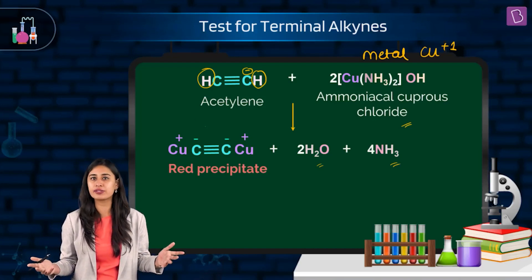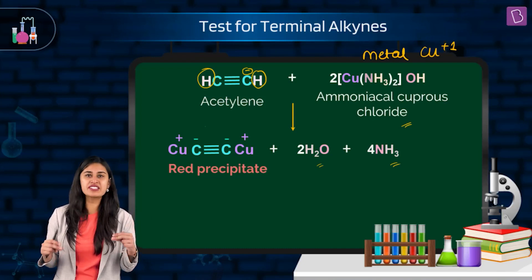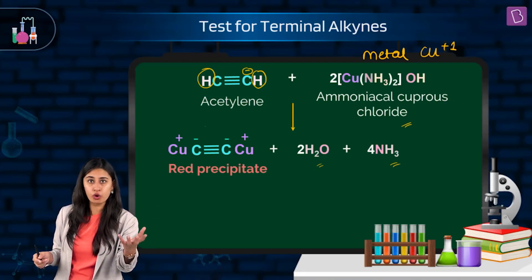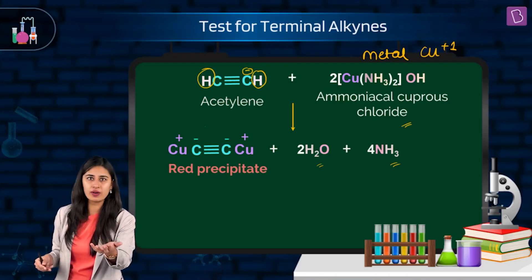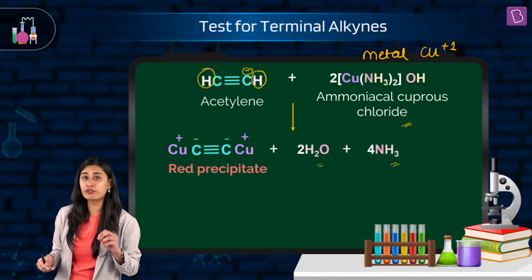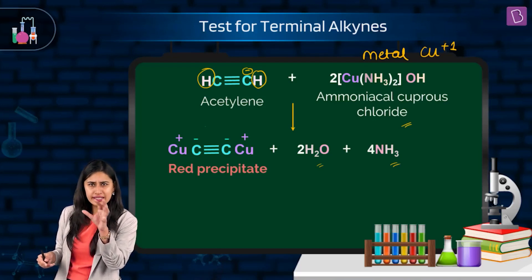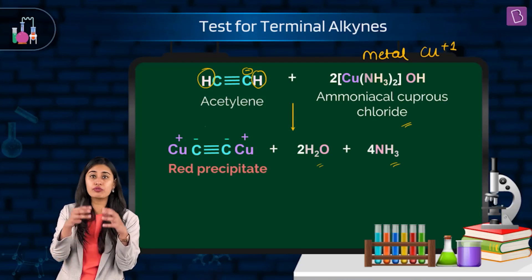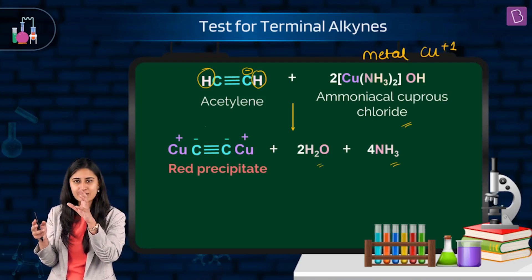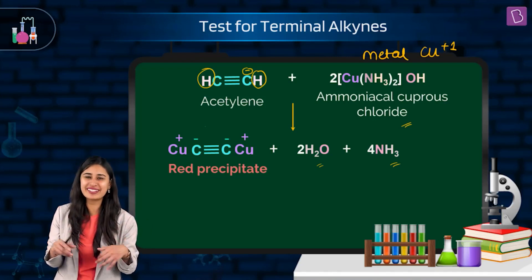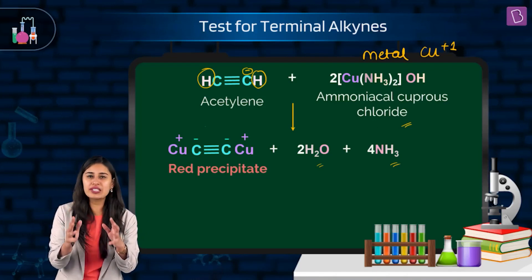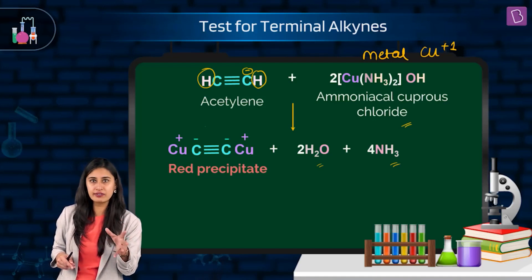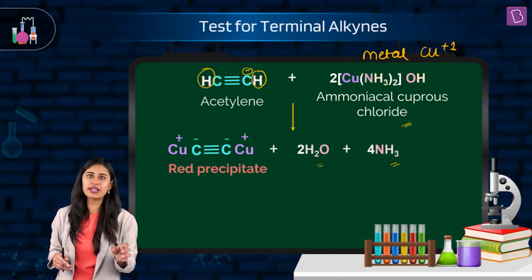Anywhere you see something distinguishable from the naked eye, it becomes a test for detection — for distinguishing. Like we saw in the test of unsaturation, the reddish-orange color of bromine in carbon tetrachloride got decolorized. Here we are talking about the test for the acidic hydrogen — if Ag⁺ replaces that hydrogen, we get a white precipitate observable from the naked eye; if copper replaces it, we get a red precipitate. Hence they become the test for terminal alkynes.